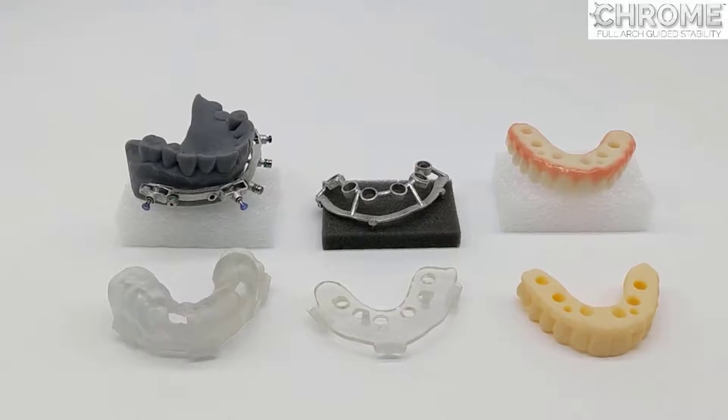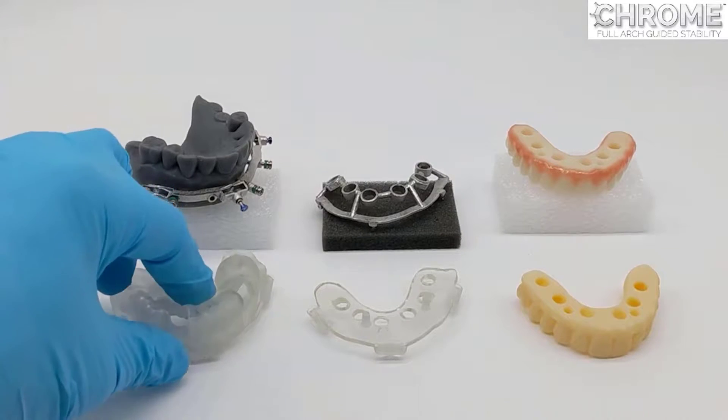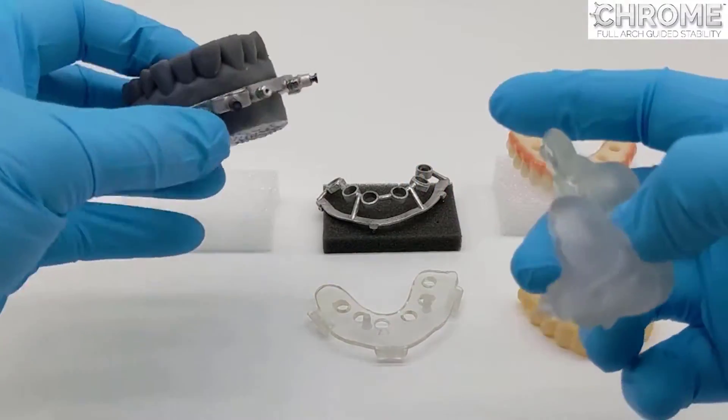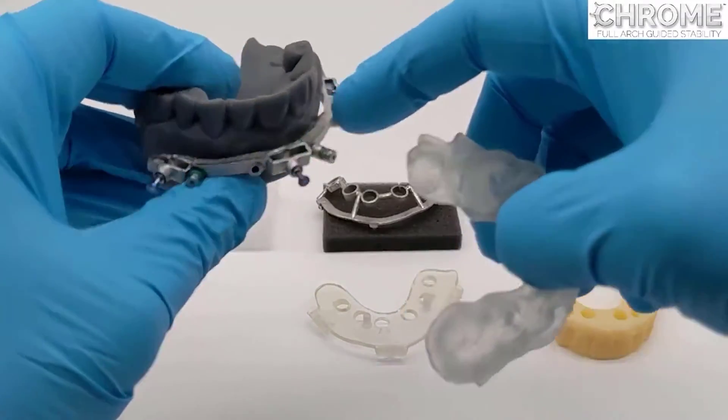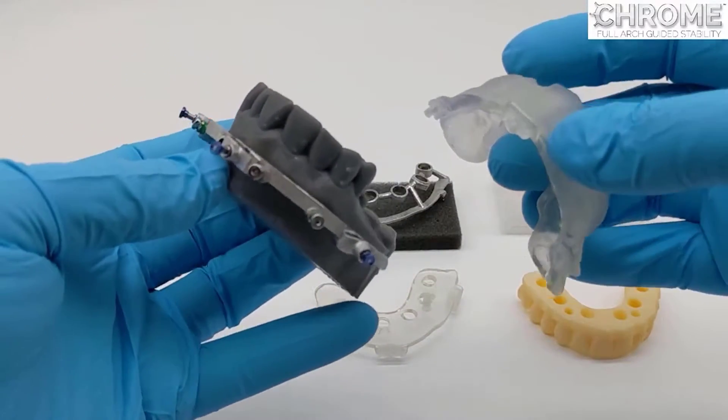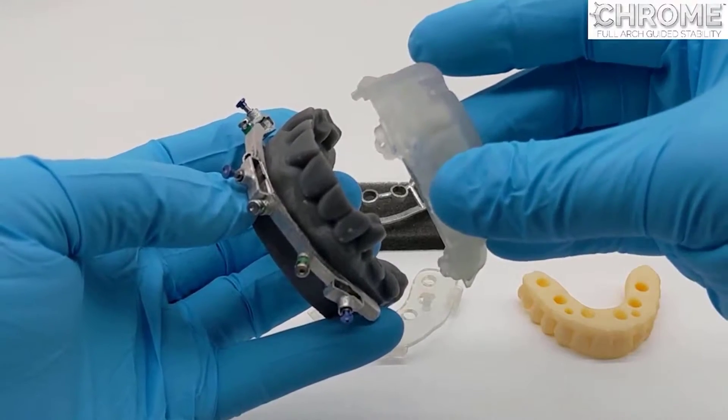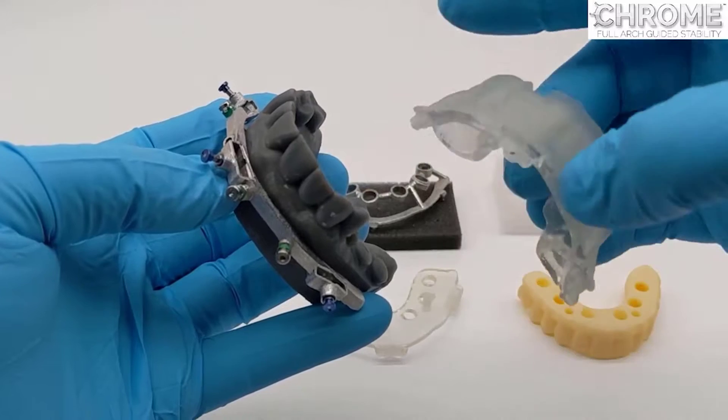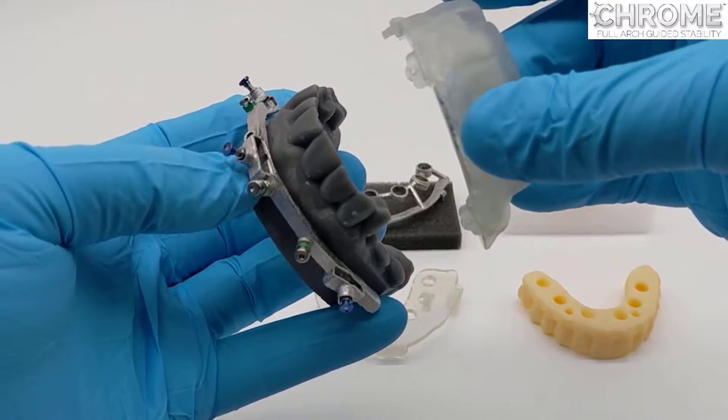The pin guide delivers the fixation base. The fixation base is the metal apparatus that is used for many functions which we will explain. The pin guide is tried in to make sure that it has no rock, that it fits on the teeth, or if it's edentulous, fits on the edentulous ridge exactly as the denture.